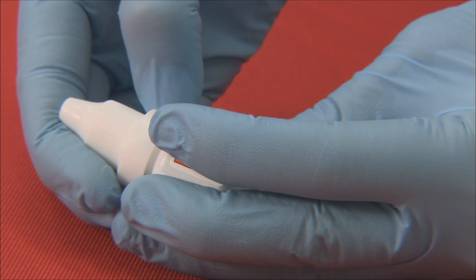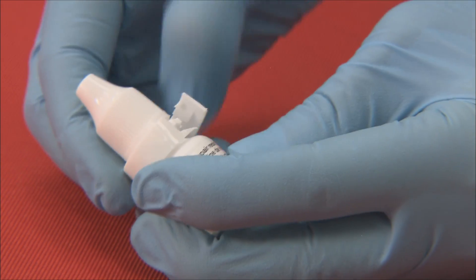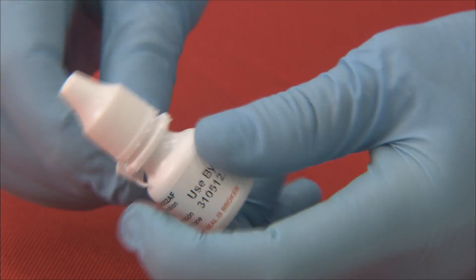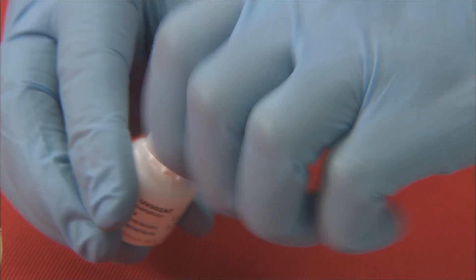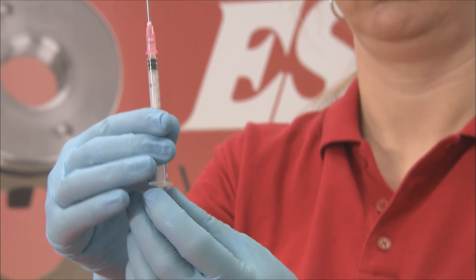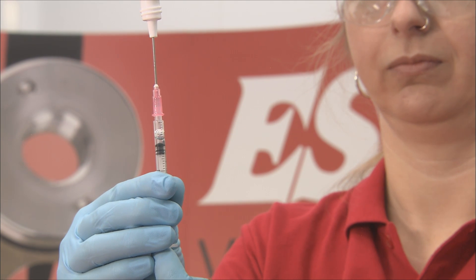Having fitted the needle to the syringe, the tamper proof seal is removed from the resin container. The needle is inserted into the tip of the nozzle, turned upside down and 0.2mm of resin is withdrawn.